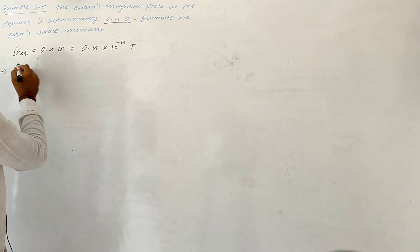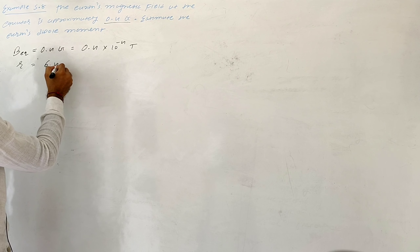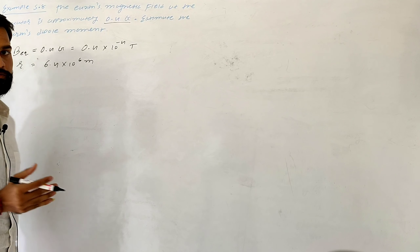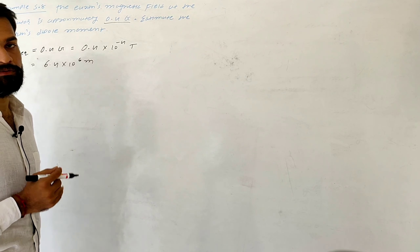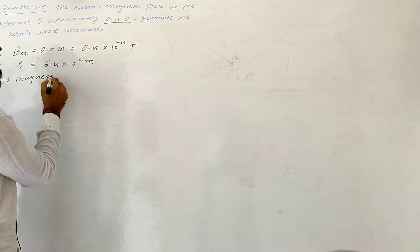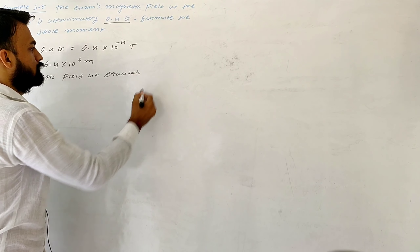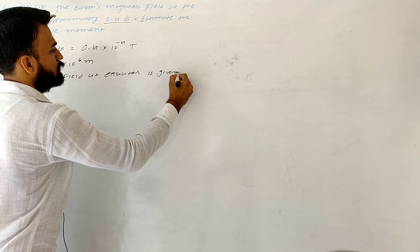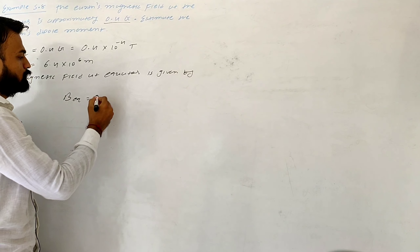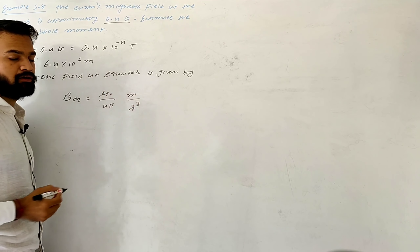Let the radius of Earth be R. We know the radius of Earth is 6400 km, so in meters it is 6.4 into 10 to the 6 meters. Now, the magnetic field at the equator is given by B_eq = (μ₀ / 4π) × m / r³.